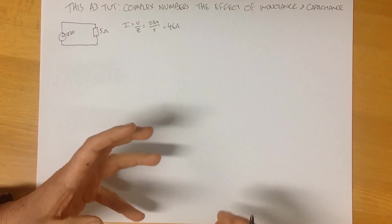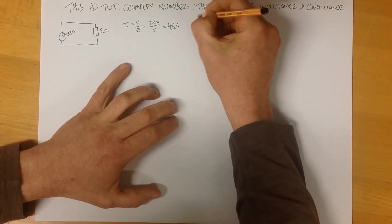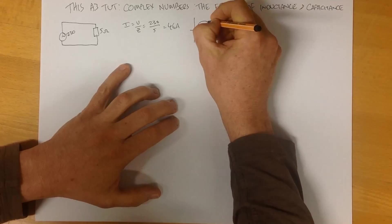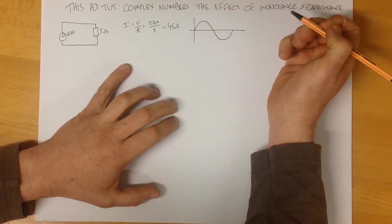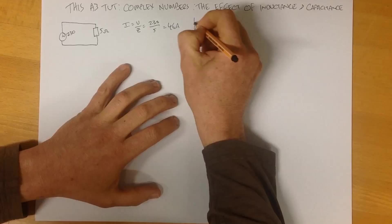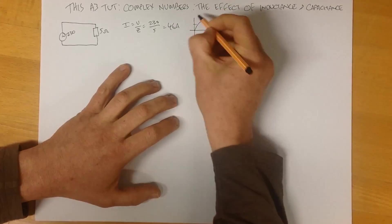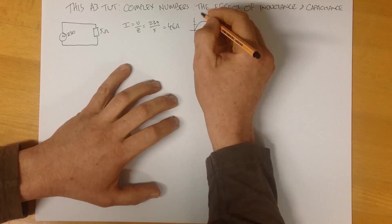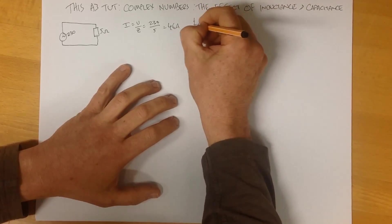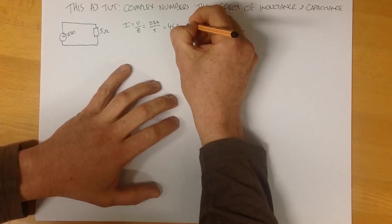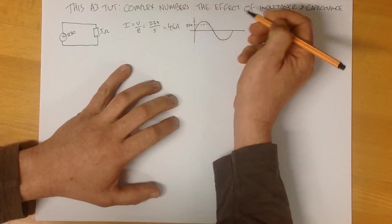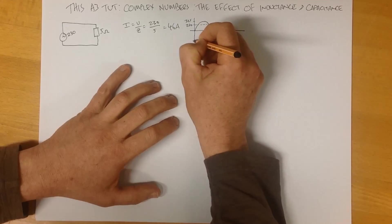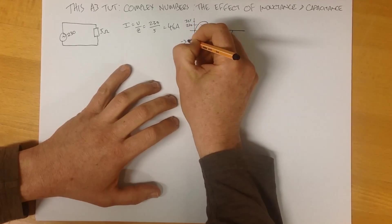We can look at this in the time domain. And in the time domain, we can show a voltage waveform here. Here's our AC voltage waveform. It has an RMS voltage of 235 and a peak voltage that will be root 2 times that. So, here is our RMS, 230, and our peak voltage will be 325. Our negative peak voltage will be minus 325.